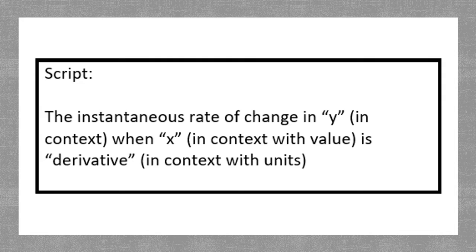This is a script that you can use when you are trying to put into words a derivative or an instantaneous rate of change happening in a scenario. Instantaneous rate of change is a slope at one point — at one x value. So it's the instantaneous rate of change, and slope is your change in y at that x. You're going to say: 'The instantaneous rate of change in [y context] when [x context] is [derivative value] [units].'